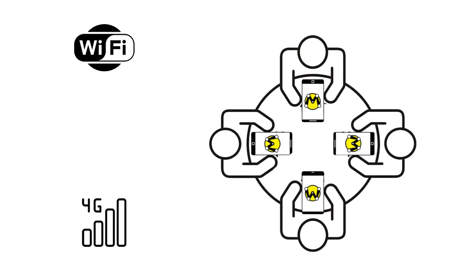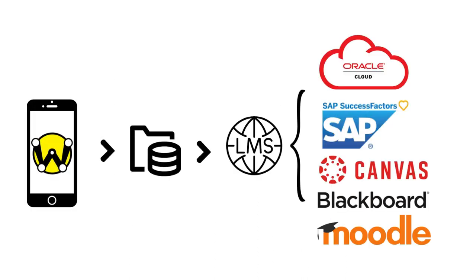For learners to engage in this, they will all need their own device and an internet source, either their own data plan or Wi-Fi. Wasta is also able to integrate with your existing LMS via a learning record store — an LRS — that communicates with your LMS, the learning management system.